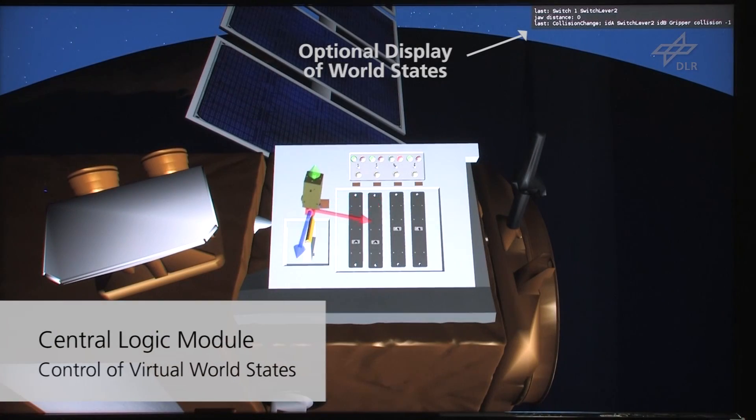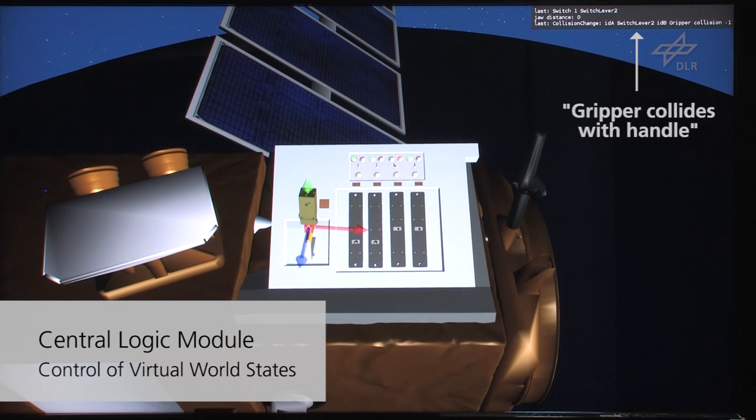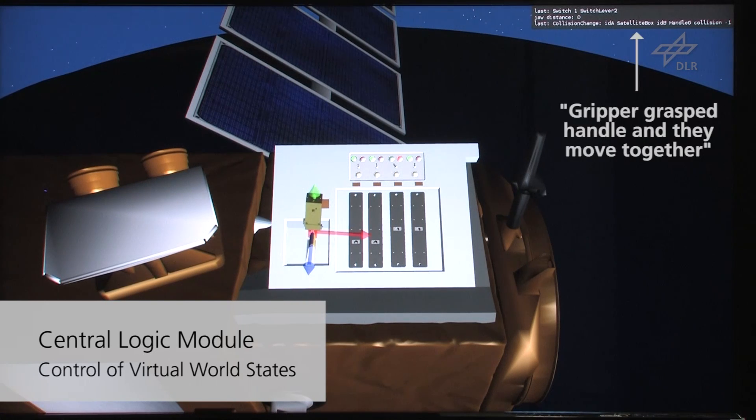We implemented a logic module which monitors the states of and between all the objects in the scene. In this example, the logic detected that the handle was grasped by the gripper. Several decisions can be made depending on the complexity of the simulation.